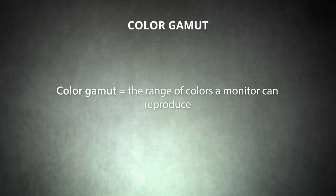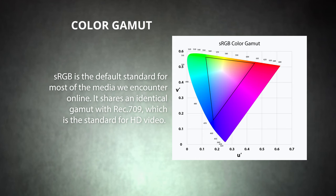Next up, color gamut. This defines the range of colors that the monitor is able to reproduce. To put the spec into context, we use reference color spaces — different reference color spaces for different use cases. sRGB is the default standard for most of the media we encounter online. It shares an identical gamut with REC 709, which is the standard for HD video.